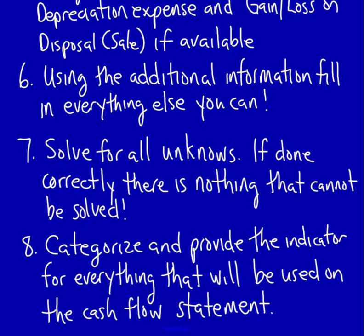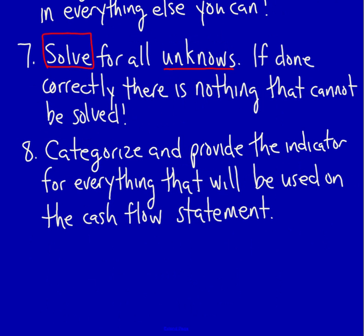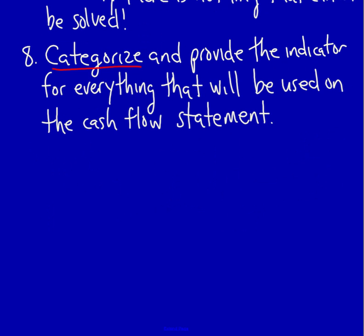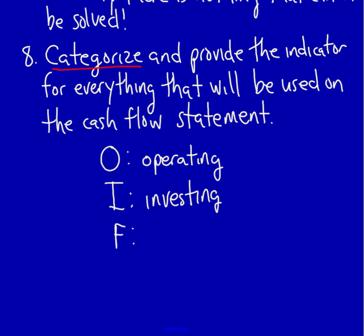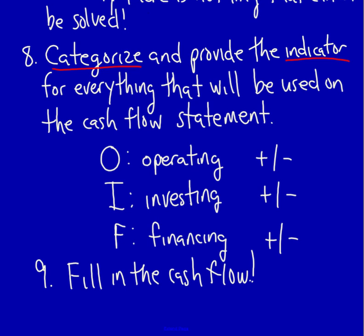Once you have everything filled in, solve for all your unknowns. If done correctly, there is nothing that cannot be solved. The last step in the process is to categorize and provide the indicator for everything that will be used on the cash flow statement. Categorizing means identifying the activity: O for operating, I for investing, and F for financing. The indicator is either a plus or minus for each activity. Then step nine: fill in the cash flow statement. Let's move on to our first example in the next video — see you then.